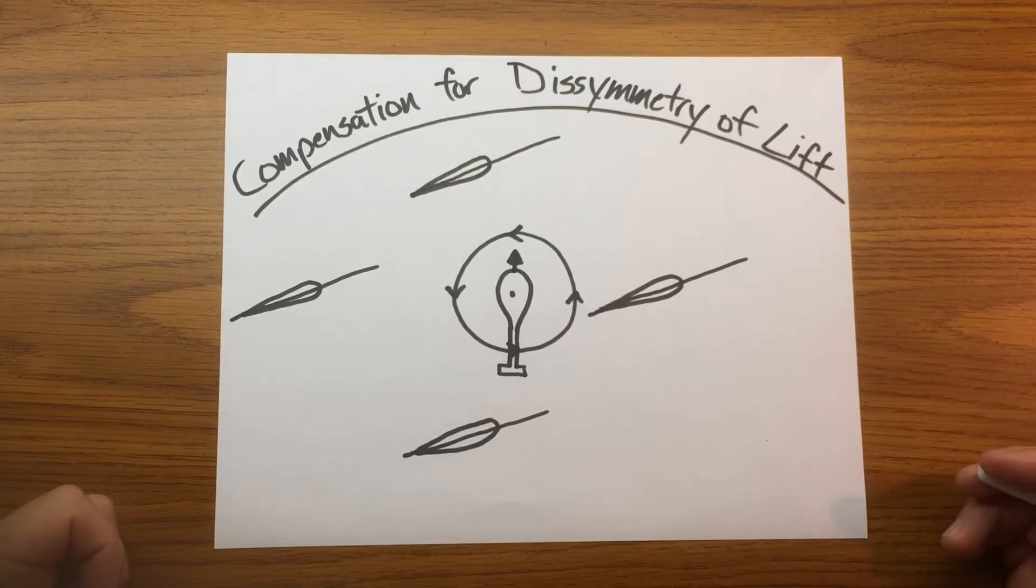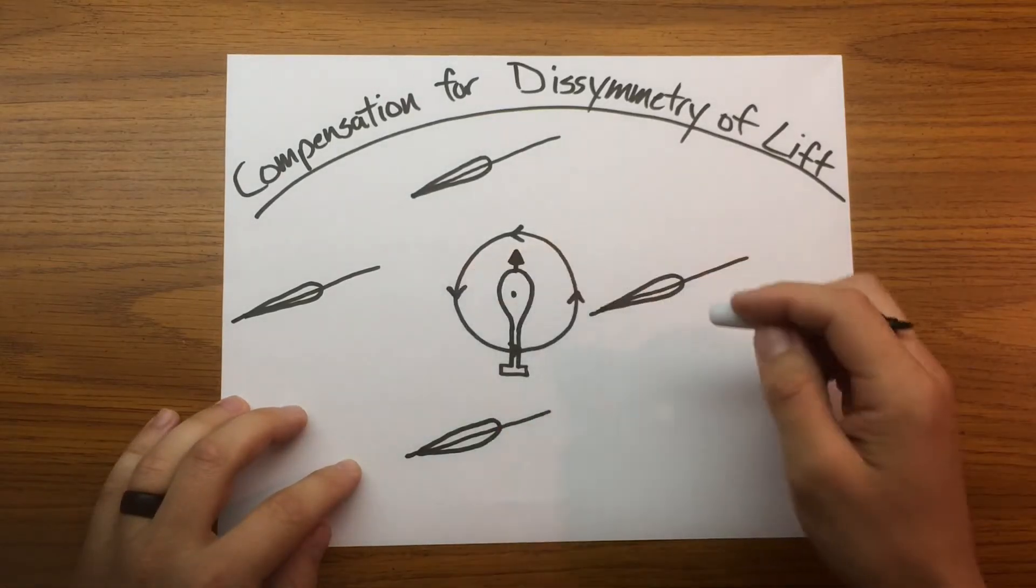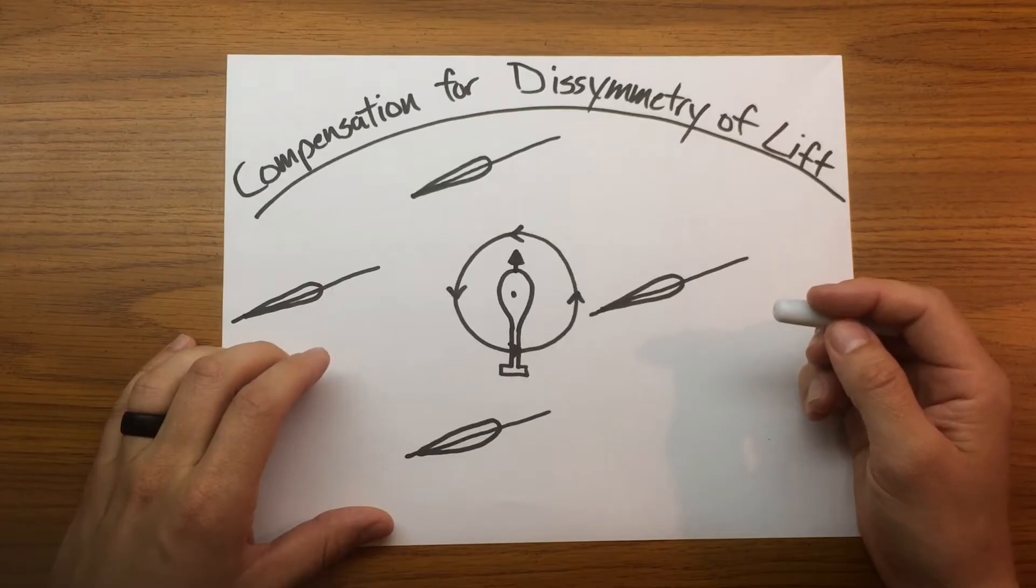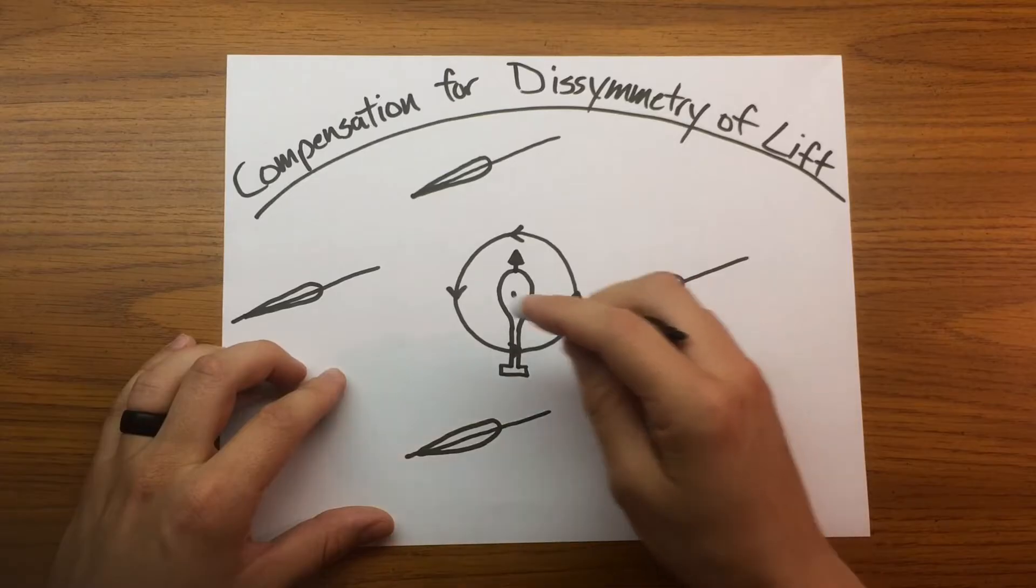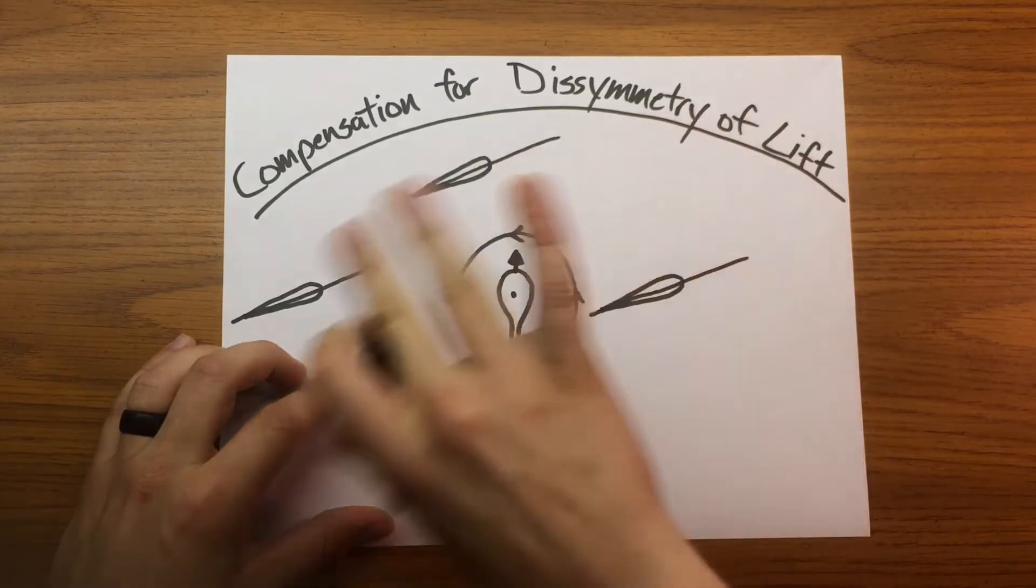So for a quick summary, dissymmetry of lift is the difference in lift that exists between the advancing side and the retreating side of the rotor disc. If dissymmetry of lift were allowed to continue without compensation, there'd be no way to maintain forward flight. The advancing side would continue to produce more lift than the retreating side and cause a constant roll to the lift.